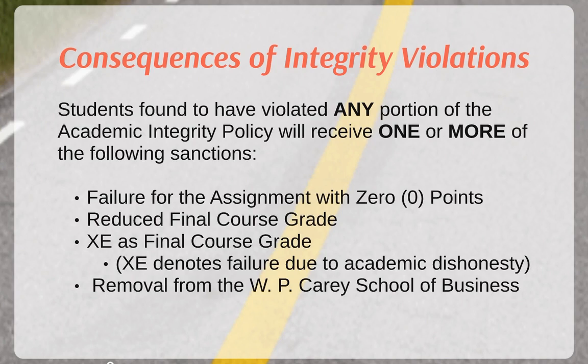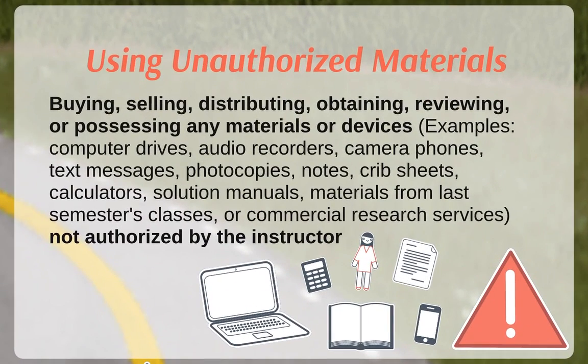So let's look at a few types of violations. First is using unauthorized materials. This would be buying, selling, distributing, obtaining, reviewing, or possessing any materials or devices not authorized by the instructor. Most students recognize that using a calculator during an exam when specifically told not to would be a form of dishonesty. However, just having a set of notes or a cell phone in your pocket during an exam could be enough to create an academic integrity violation. You should always make sure that you leave all unauthorized materials put away, either in your bag or your purse.